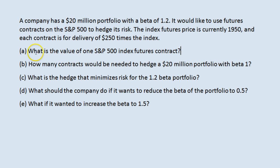The first question asks: what is the value of one S&P 500 index futures contract? It is the index value, given as $1,950, and each contract is for $250 times that. $1,950 times $250 is $487,500. So that's the value of one S&P 500 index futures contract.